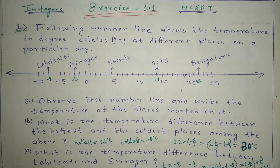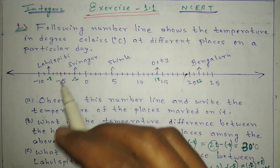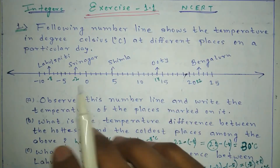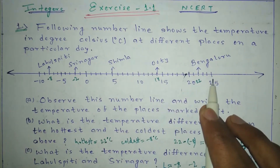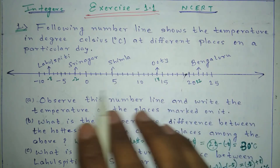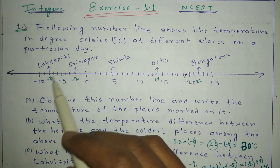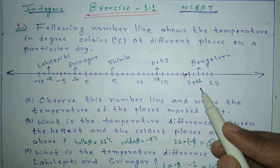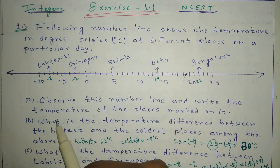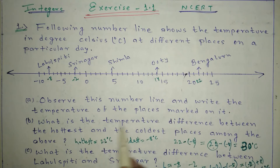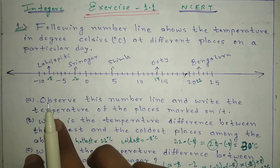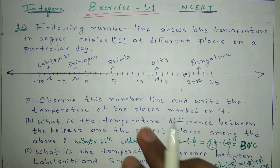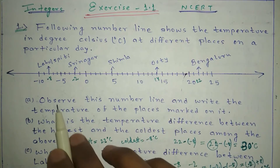Let's try some questions from Exercise 1.1 of the NCERT book. The first question gives a number line showing temperatures in degrees Celsius for different places on a particular day. Lahul Spiti is minus 8, Srinagar is minus 2, Shimla is 5, Ooty is 14, and Bangalore is 22. In part A, we just need to write the place names and their corresponding temperatures.